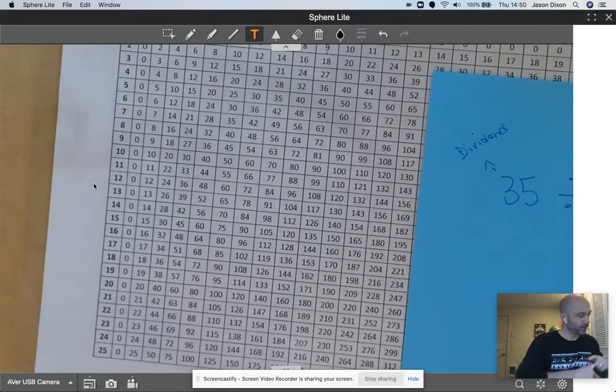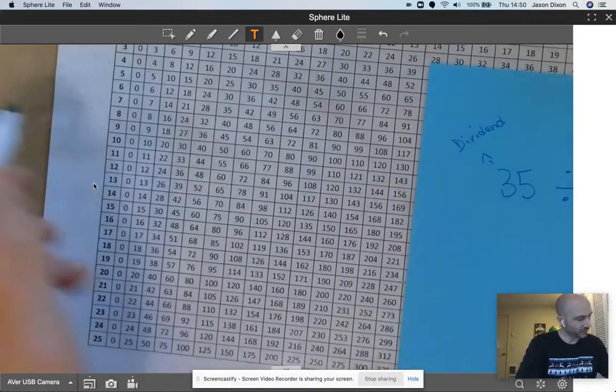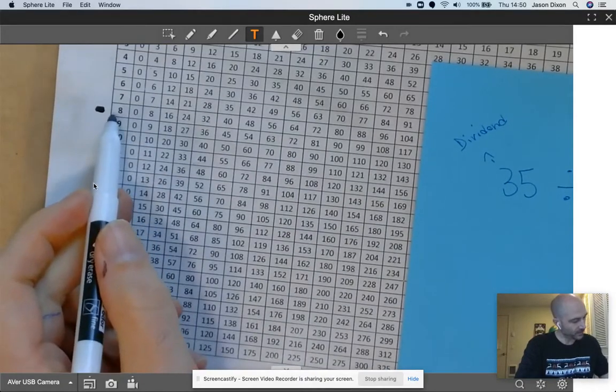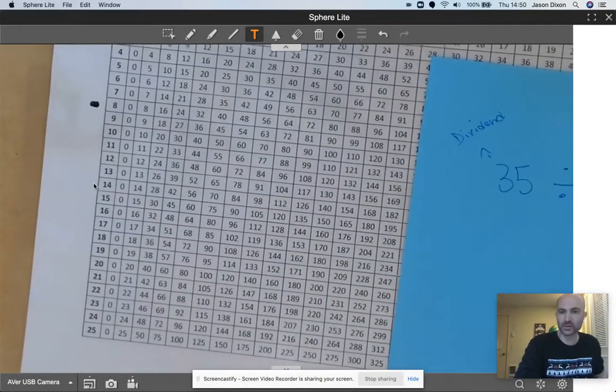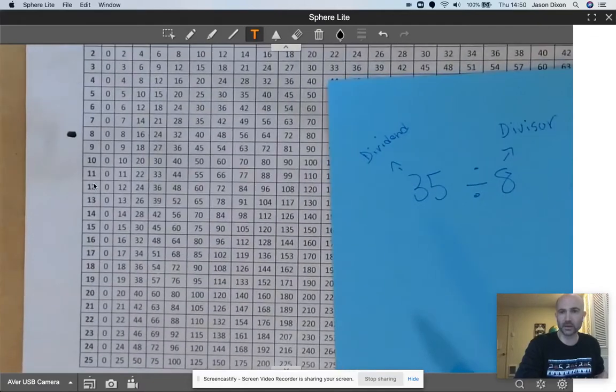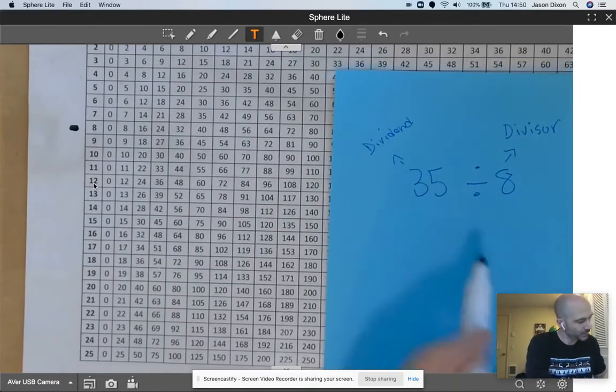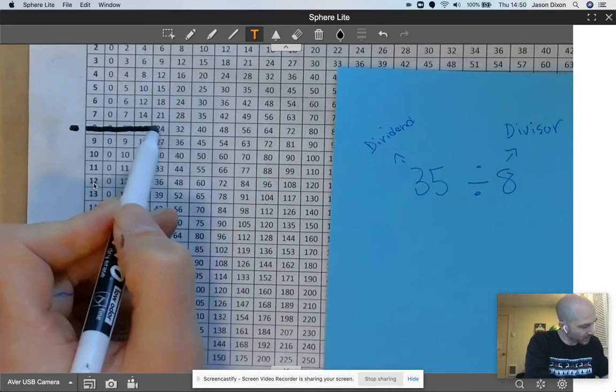So what you'll do is you'll take the divisor and I like to put a little mark by the divisor and I'm going to get as close to 35 as I possibly can without going over. So I like to draw a line.